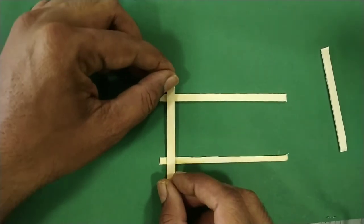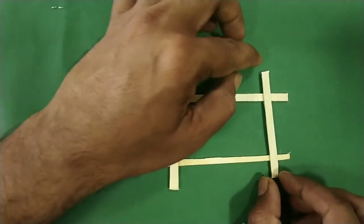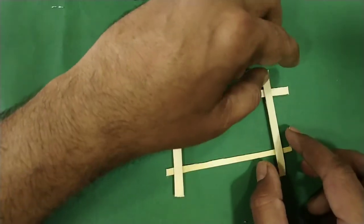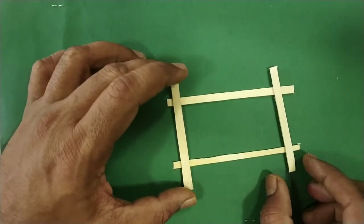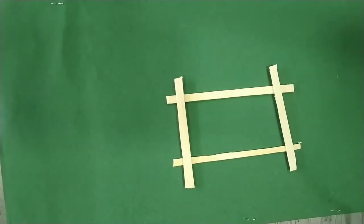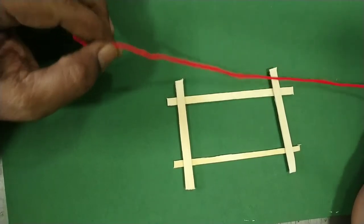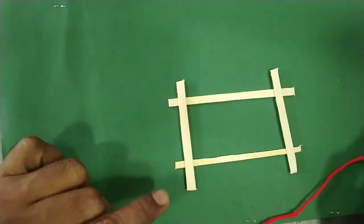Take the equal length sticks and position them - equal length at top and bottom, shorter length at the sides - and tie them together with the thread.